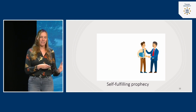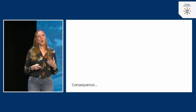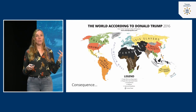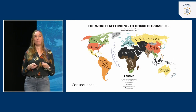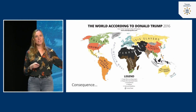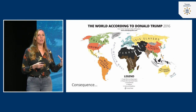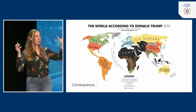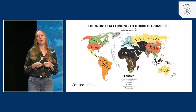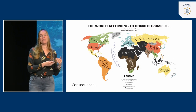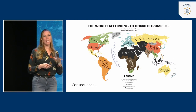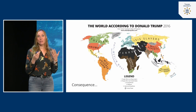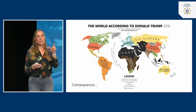Expectations are at the core of how social interactions work, and one of the consequences of this process is that stereotypes and prejudice persist in the same way. Here you can see 'the world according to Donald Trump' from 2016 — his stereotypical beliefs about people around the globe. These are his pre-existing beliefs, and he will be on the lookout for behavior from people in different groups that confirms those initial ideas.